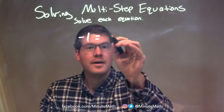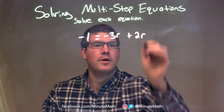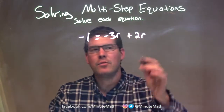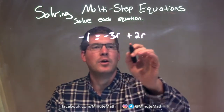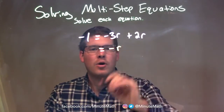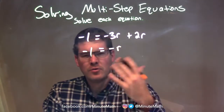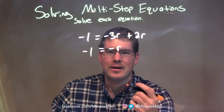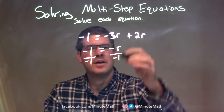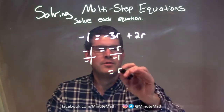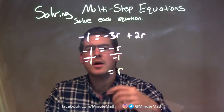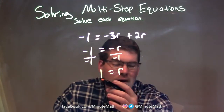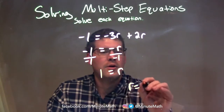Negative 1 equals negative 3r plus 2r. I want to combine my like terms on each side. Negative 1 is just by itself on the left. My two like terms on the right are negative 3r and positive 2r. Combining those: negative 3r plus 2r gives me negative r. That negative r is really negative 1 times r. I can divide by negative 1 on both sides — negative divided by negative is positive — leaving positive r on the right. Negative 1 divided by negative 1 is positive 1. So r equals 1.